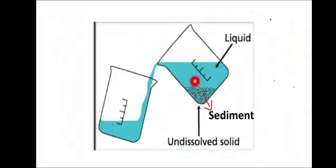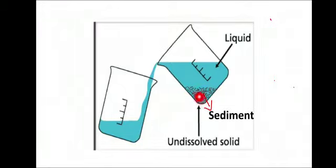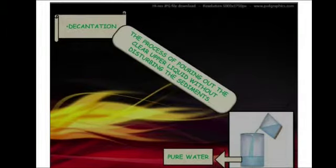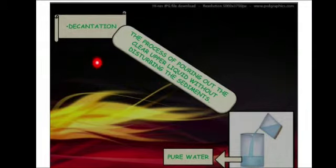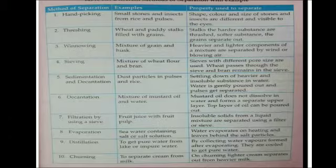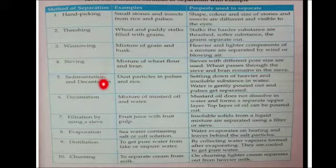Here on your screen you can see a picture of decantation. When the heavier sediment settles at the bottom, we transfer the clear water into another beaker without disturbing the sediment — this process is called decantation. In this chapter we have learned about handpicking, threshing, winnowing, sieving, sedimentation, decantation, and filtration.